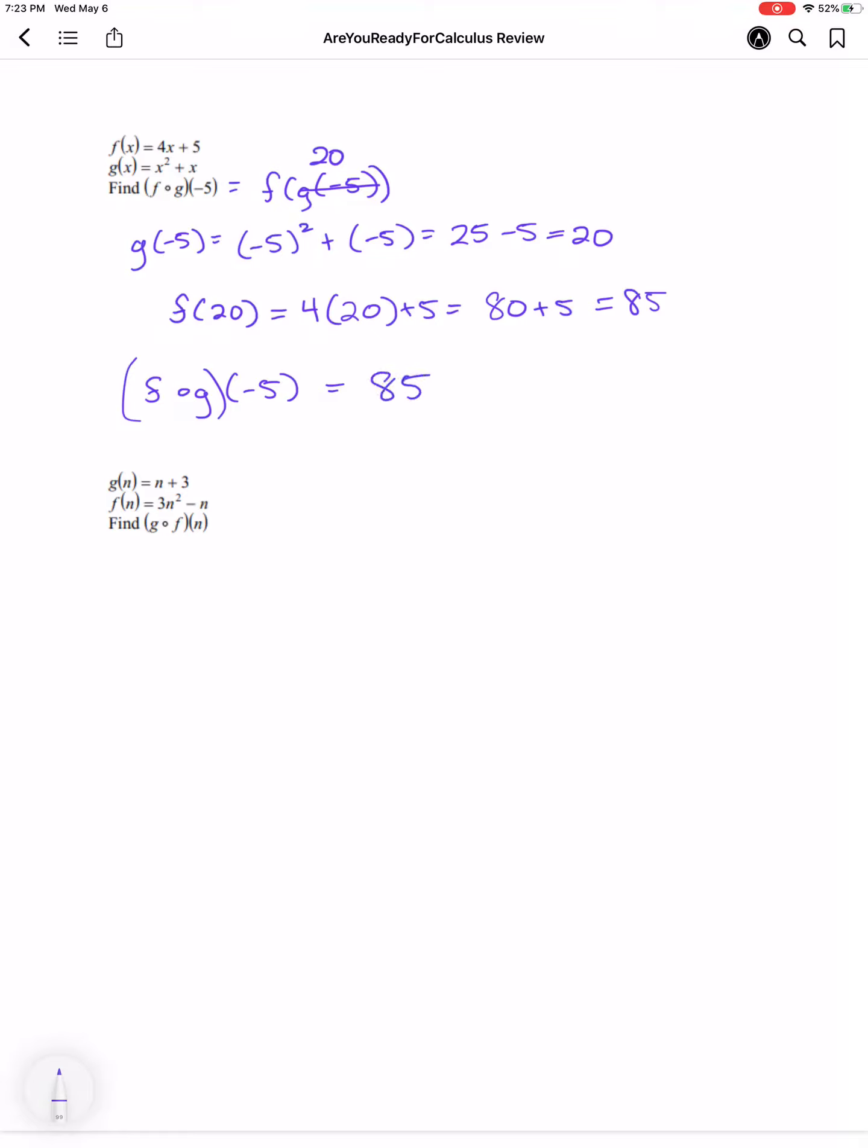In the other one, we just have the value of n. So I'm going to put that in as my input, and this time we have g of f of n. So let's find f of n first. That'll be 3n squared minus n. I'm just inputting n where I see n.